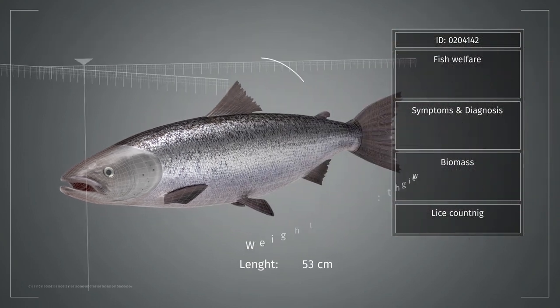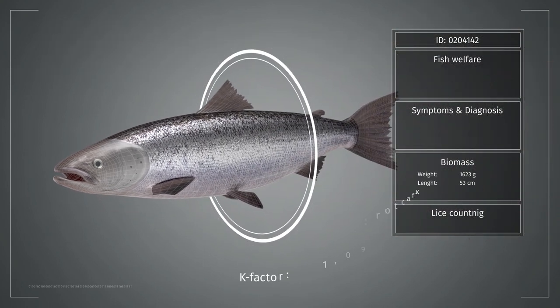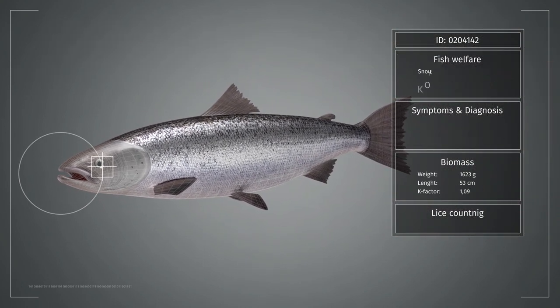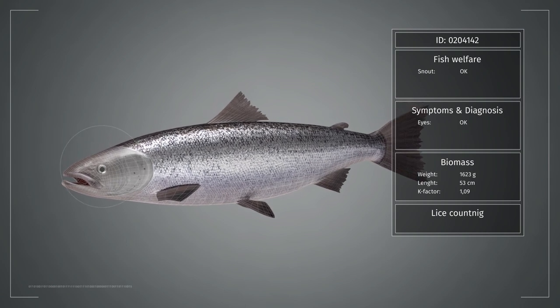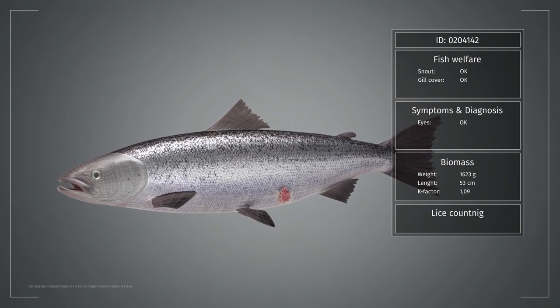Precise weight and growth are measured for each fish. iFarm measures welfare indicators such as condition factor, injuries and deformities.